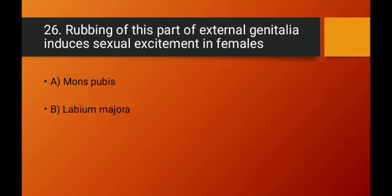Question number twenty-six: rubbing of which part of the external genitalia induces sexual excitement in females? The clitoris is a small, finger-like, highly touch-sensitive projection at the upper junction of the labia minora that is homologous to the penis. When stimulated, it induces sexual excitement in females. Option C — clitoris — is the right answer.